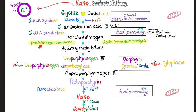Next, by an enzyme called porphobilinogen deaminase — which will be the subject of an upcoming video on acute intermittent porphyria — you have hydroxymethylbilane. By an enzyme known as uroporphyrinogen III cosynthase, I get uroporphyrinogen III. This enzyme will be missing in a disease we'll talk about in the next video called congenital erythropoietic porphyria.